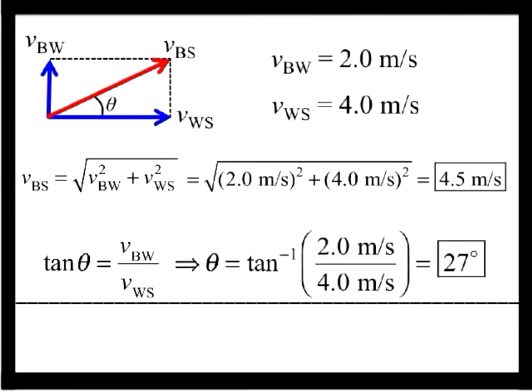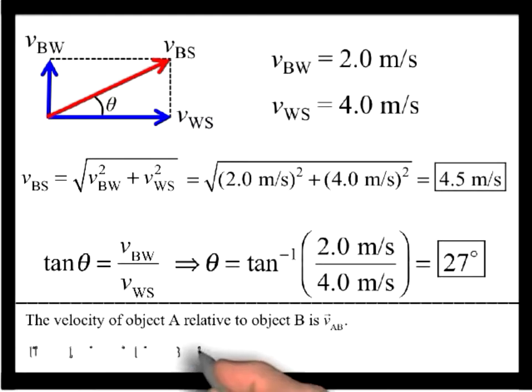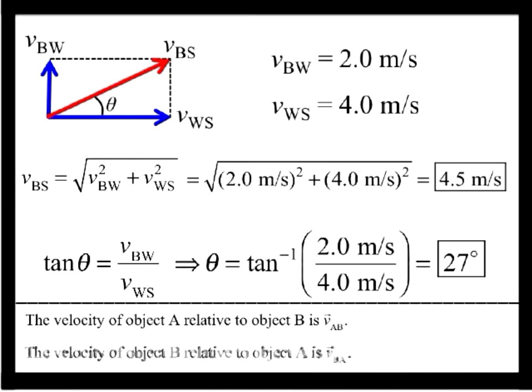One final note on relative velocity in Chapter 3. While the velocity of object A relative to object B is VAB, and the velocity of object B relative to object A is VBA, this is also equal to minus VAB. Thus, if two cars are traveling on the highway in opposite directions, and both with a speed of 25 m per second, then the relative speed of the first car to the second will be 50 m per second, and the relative speed of the second car to the first will be minus 50 m per second.